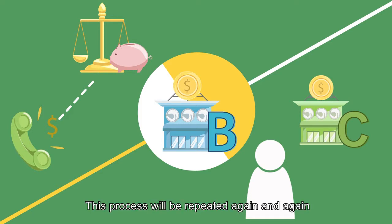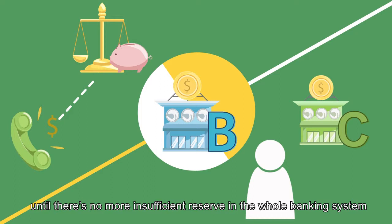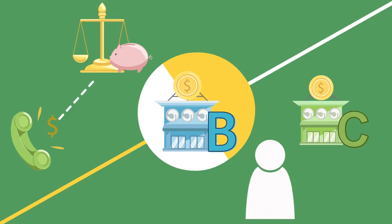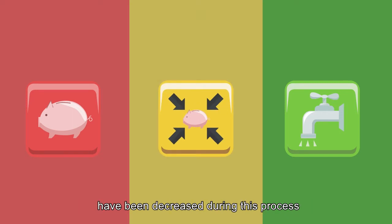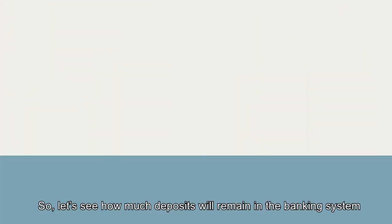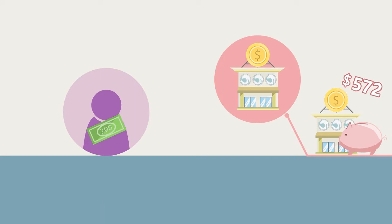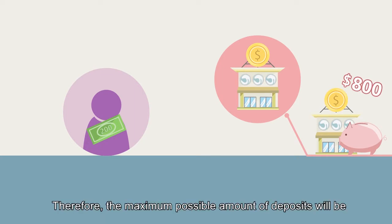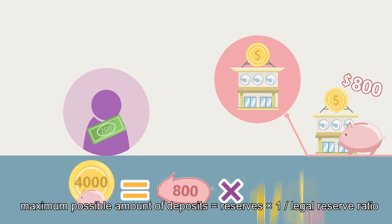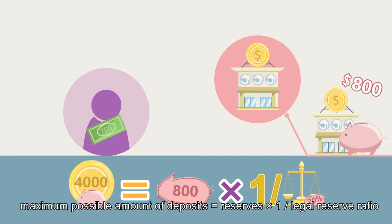Similar to Bank A, Bank B will need to call back some loans to meet the legal reserve requirement, and then other people will withdraw money from other banks to repay such loans. This process will be repeated again and again until there is no more insufficient reserve in the whole banking system. We can see that both deposits and money supply have been decreased during this process — that's what we call deposit contraction. So let's see how much deposits will remain in the banking system after this deposit contraction process. In the beginning, someone took away $200 in deposits, and only $800 reserves remained within the banking system. Therefore, the maximum possible amount of deposits equals reserves times 1 divided by the legal reserve ratio.